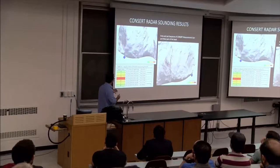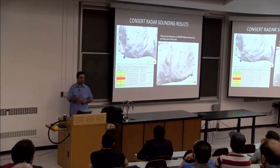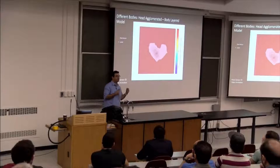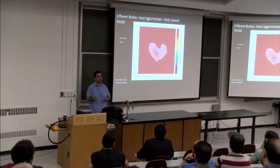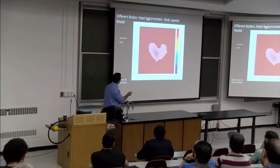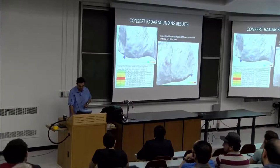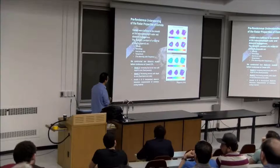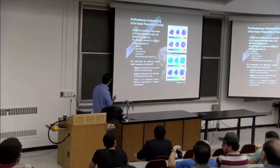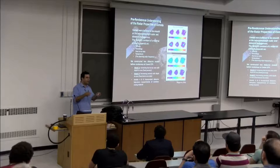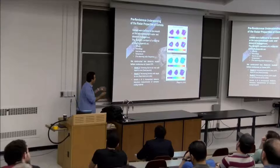Amazingly, we used the signal from the CONSERT instrument as a GPS to locate the lost lander. By understanding the reflections received in orbit, we performed a triangulation analysis to locate the lander. To do this, we had to understand the electrical properties of the comet as a function of its porosity, mineralogy, dust-to-ice ratio, and temperature. We performed lab measurements, assumed the dielectric properties, knew the location of the orbiter, and had to find the location of the lander.